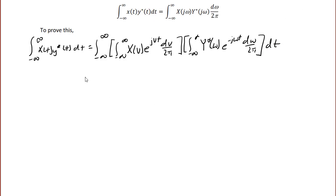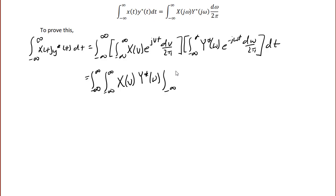Rearranging the integrals, this can be written as the integral from negative infinity to infinity, the integral from negative infinity to infinity, of X(v) Y-conjugate(ω), times the integral from negative infinity to infinity of e^(jvt) e^(-jωt) dt, dv over 2π, dω over 2π.